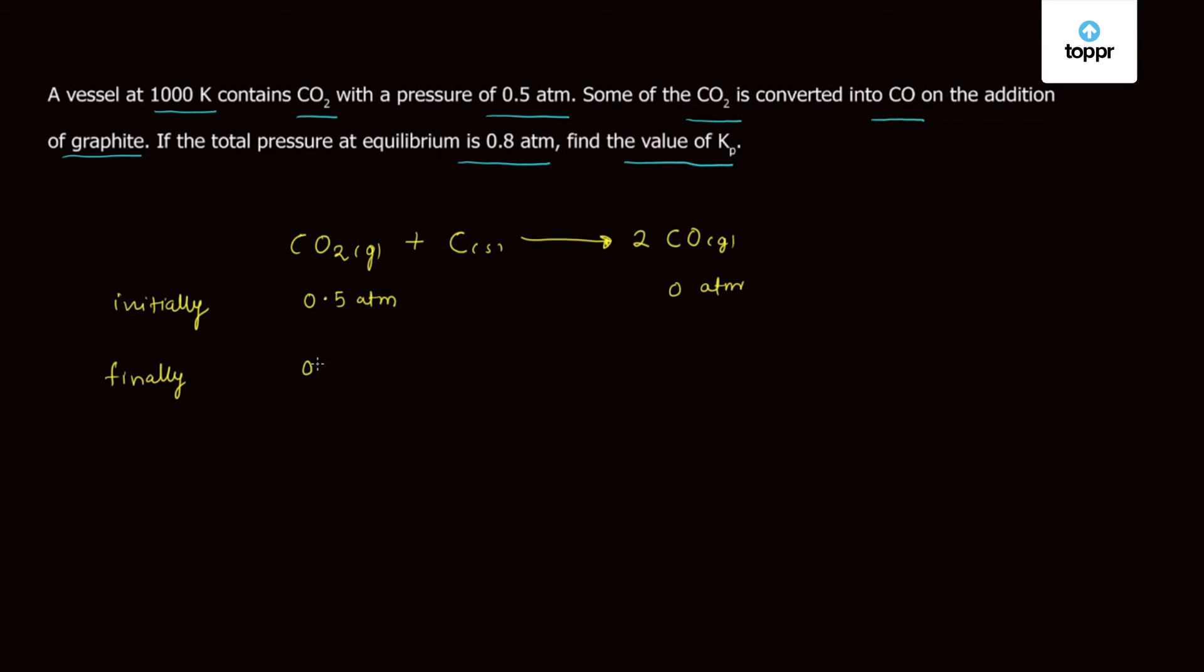So as we know the total pressure at equilibrium is 0.8 atm which gives us the total pressure of 0.5 minus x plus 2x.